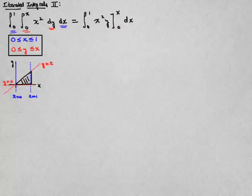So when I plug that in, I'm first going to plug in x for y, and when I do that, x squared times x gives me x cubed, and then I plug in 0 for y, and that gives me 0.